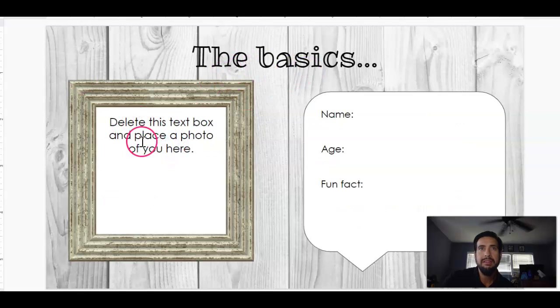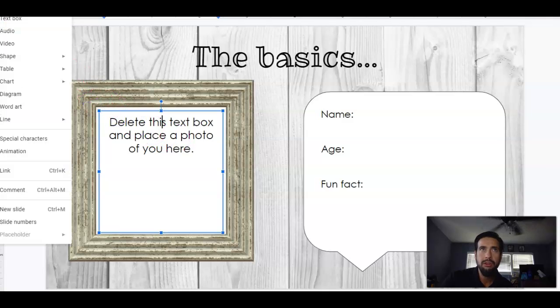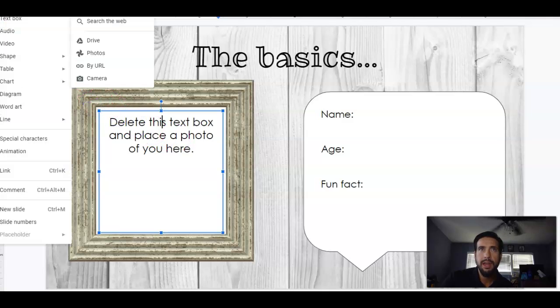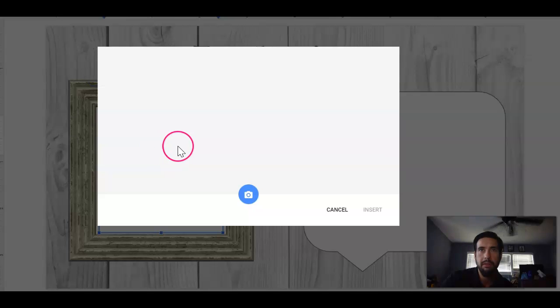It says delete this text box and place a photo here. So what you're going to do is you're going to go to Insert. And if you upload a picture, you can just do that. On your computers, you can probably just take a picture and find your camera.